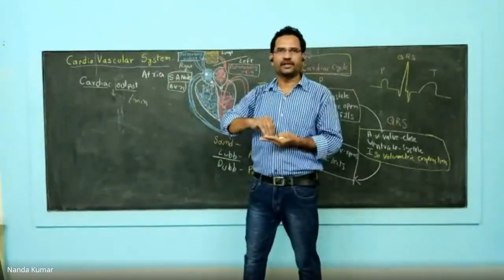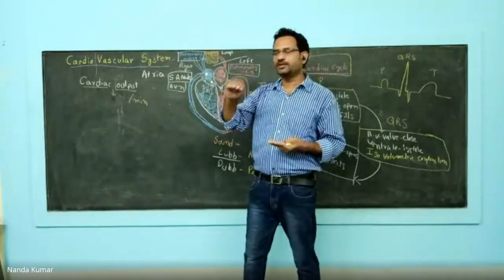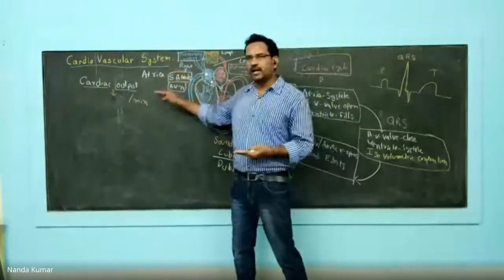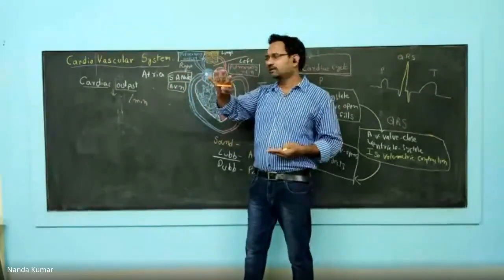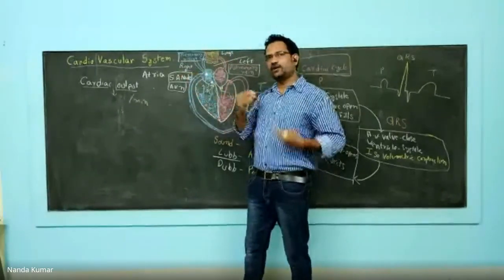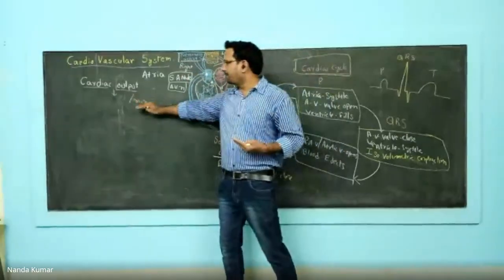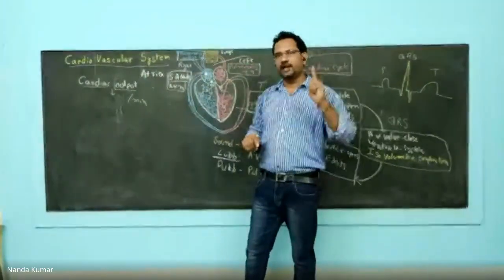The simple definition was asked in the 2018 G-Path exam — you can go and refer it. The question was: what is cardiac output? The amount of blood coming out of the heart per minute is known as cardiac output.